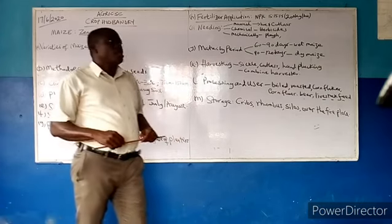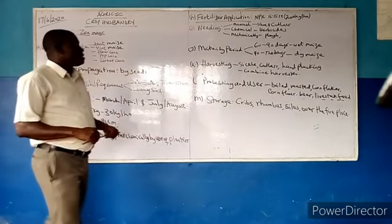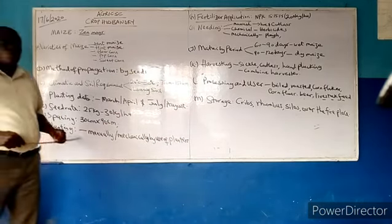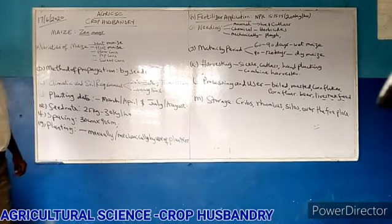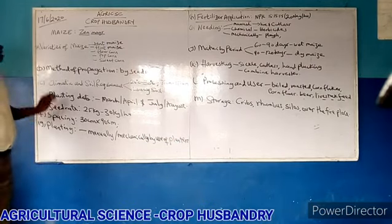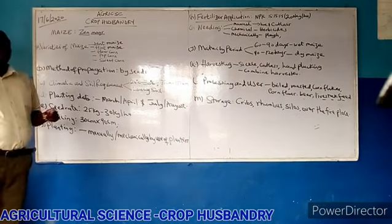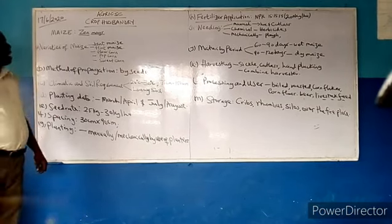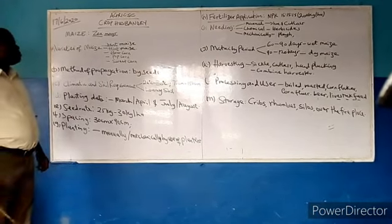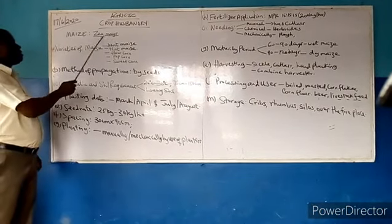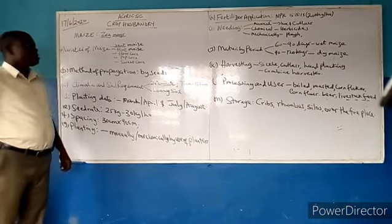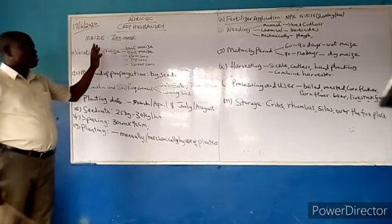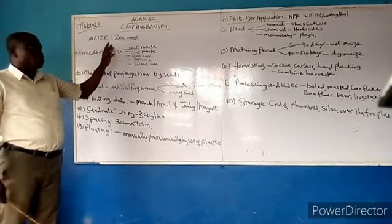Today we are continuing our topic on crop husbandry. We are looking at the first crop here, which is maize. The botanical name is Zea mays, and I have explained before how the maize arrived at that name.